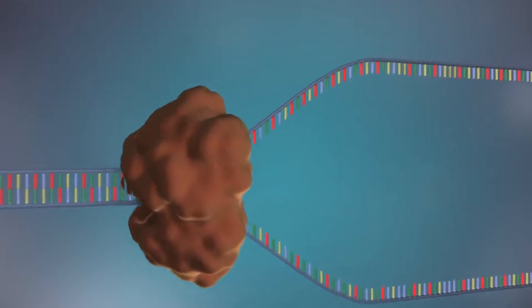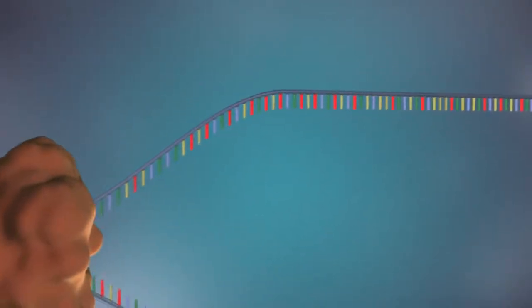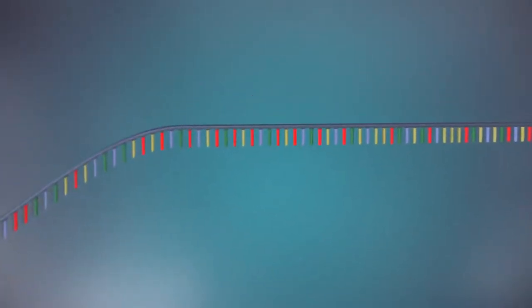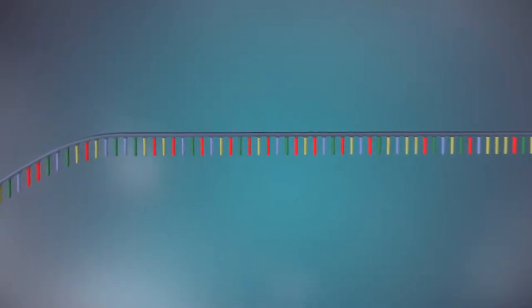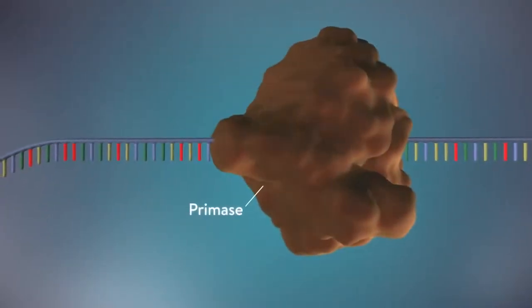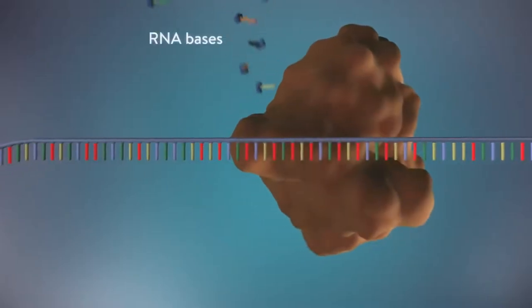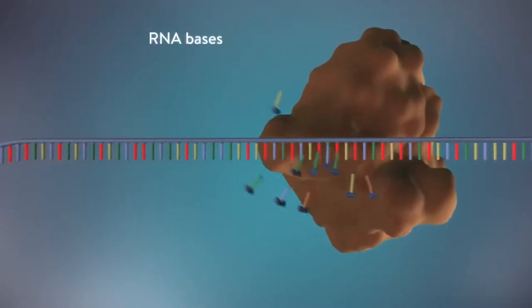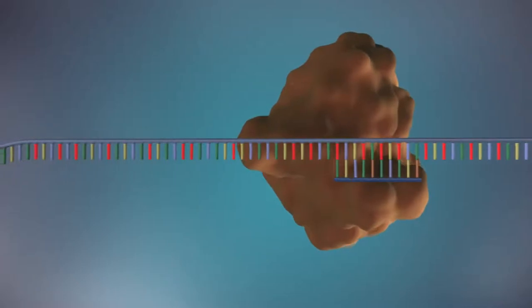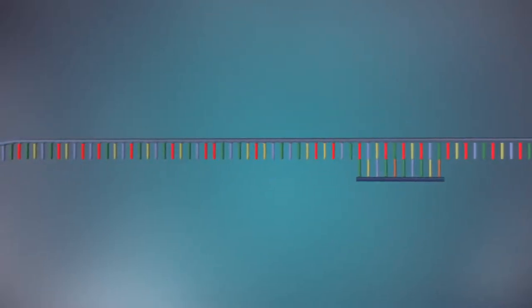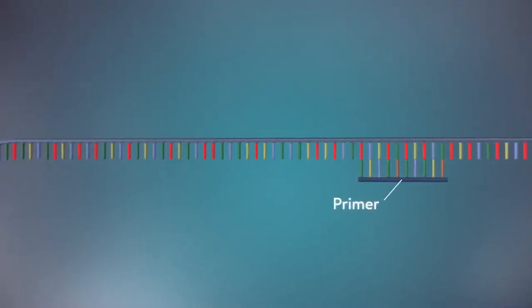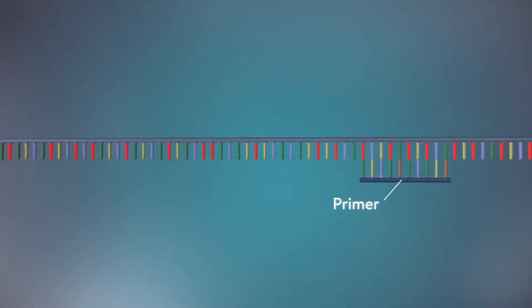The separated strands each provide a template for creating a new strand of DNA. An enzyme called primase starts the process. This enzyme makes a small piece of RNA called a primer, which marks the starting point for the construction of the new strand of DNA.